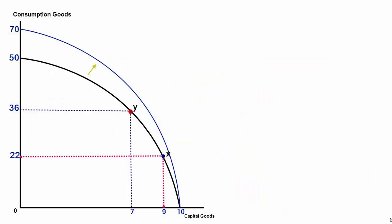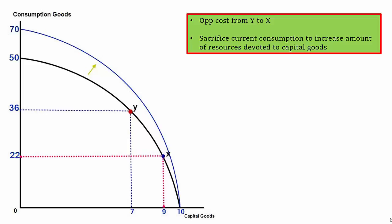We just need to look at one more thing in terms of growth on PPFs and that's looking at consumption goods and capital goods. You'll see the shift here doesn't equally move both ways and there is a reason for this. So let's assume we start at Y. We're producing 36 consumption goods and let's just call those things like clothing, pens, phones, that kind of thing. And then we're going to move to X which has an opportunity cost of 14 consumption goods in order to gain two more units of capital goods, things like machinery and so forth.